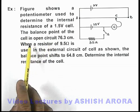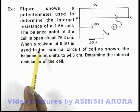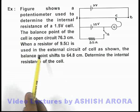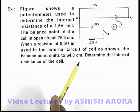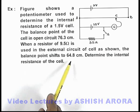The balance point of the cell in open circuit is 76.3 centimeter. When a resistor of 9.5 ohm is used in the external circuit of cell as shown, the balance point shifts to 64.8 centimeter.